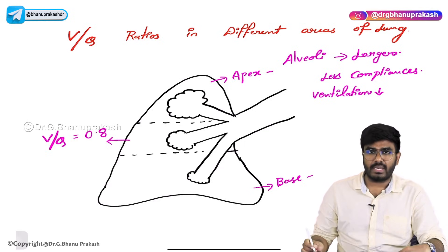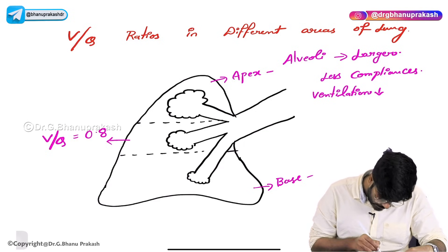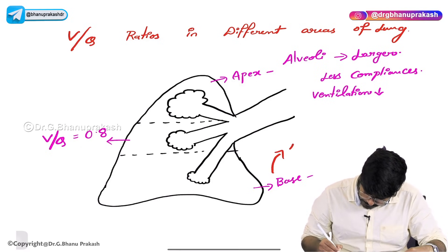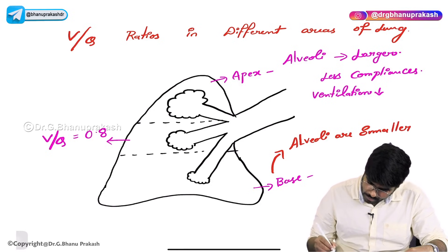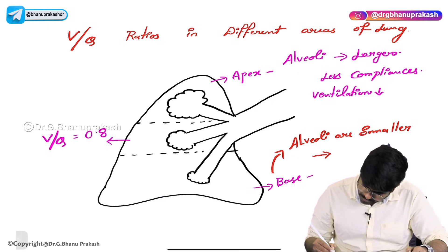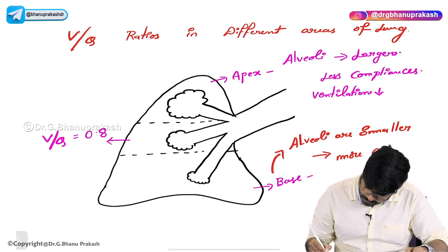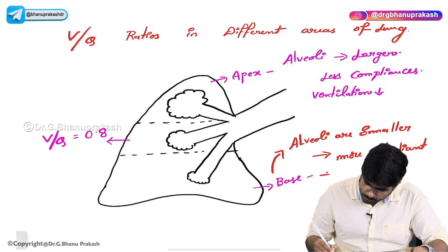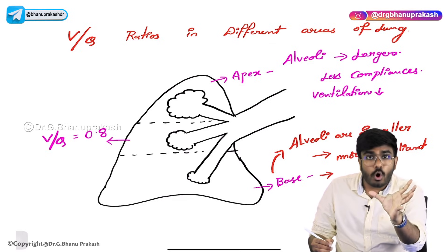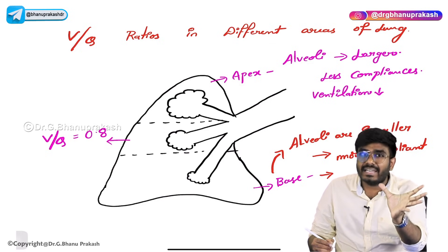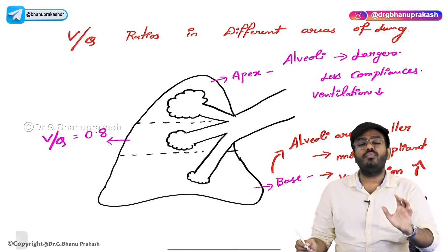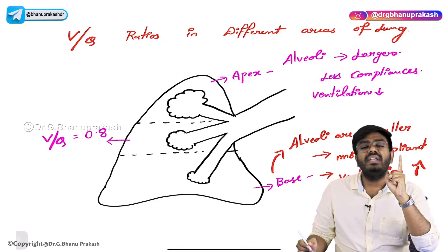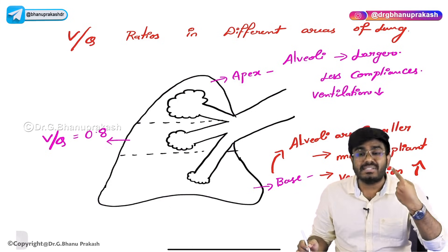In the base of the lung, the alveoli are smaller. If they are smaller, they can be stretched further, so they are more compliant. Now, being more compliant means they can be stretched more — they can be more ventilated. So ventilation is more in the base. In the apex ventilation is less; in the base of the lung, ventilation is more.